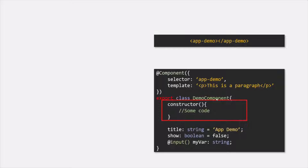In order to instantiate a class — no matter if it is a component class, a directive class, or a normal class — we call its constructor. Keep in mind that every TypeScript class has a constructor. If the constructor is not defined explicitly, it will get a default parameterless constructor, which gets called to instantiate the class. So whenever the selector of a component class is encountered, the constructor of that component class is called.